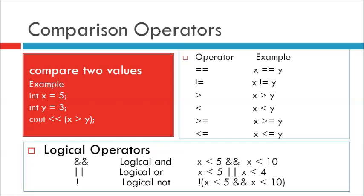C++ logical operators are used to determine the logic between variables or values. Operator && (double and), name: logical AND — it returns true if both statements are true, for example: x < 5 && x < 10. Operator || (or), name: logical OR — it returns true if one of the statements is true, for example: x < 5 || x < 4. Operator ! (not), name: logical NOT — it reverses the result, returning false if the result is true, for example: !(x < 5 && x < 10).